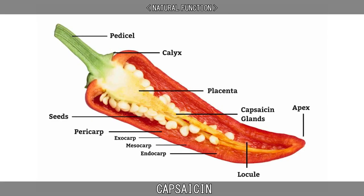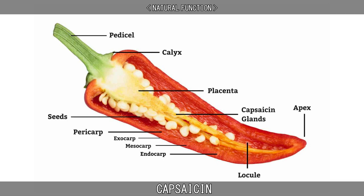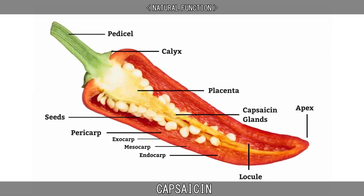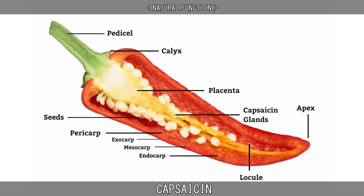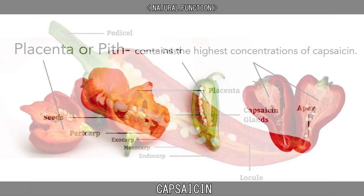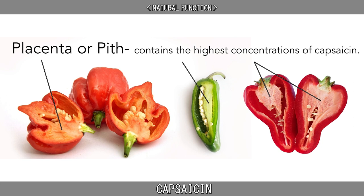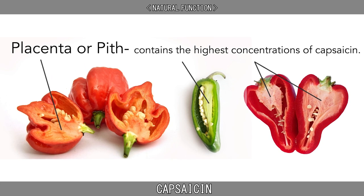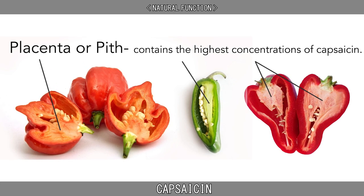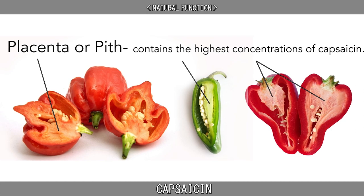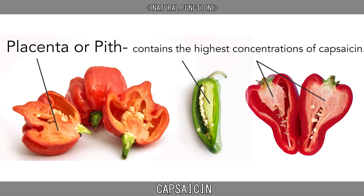Capsaicin is present in large quantities in the placental tissue, the internal membranes and, to a lesser extent, the other fleshy parts of the fruits of plants in the genus Capsicum. The seeds themselves do not produce any capsaicin, although the highest concentration of capsaicin can be found in the white pith of the inner wall, where the seeds are attached.